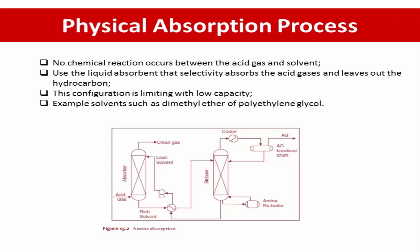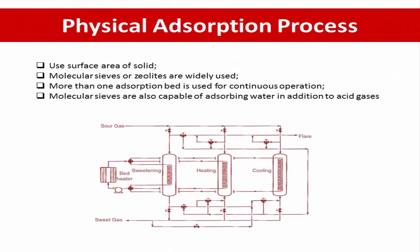The mixed gas passes counter-current to the solvent. When the solvent becomes saturated with acid gas, the pressure is reduced and hydrogen sulfide and carbon dioxide are desorbed. The solvent is then returned to the absorption tower for reuse. An example configuration of the physical absorption process is shown below. Note that this configuration has limiting capacity.